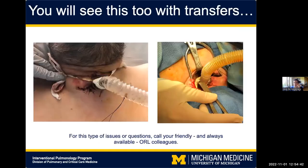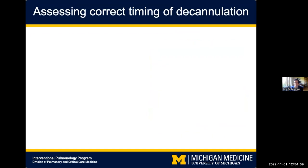You will also see mishaps — here is a tracheostomy where the flange plate was buried within the soft tissue of the patient. The tip of the tracheostomy was actually in the soft tissue rather than the airway.